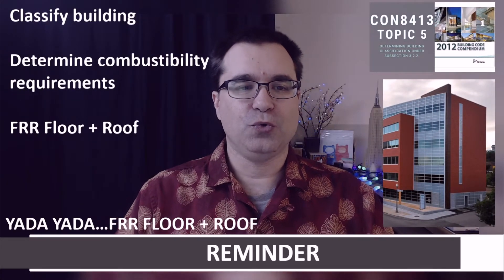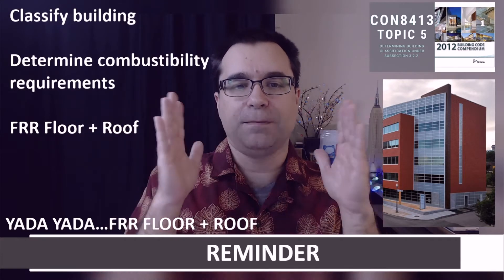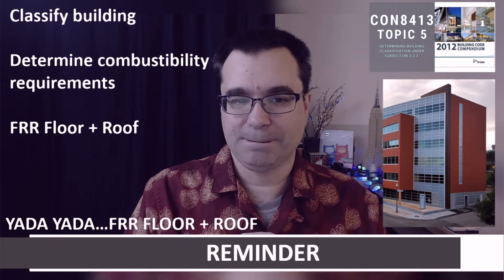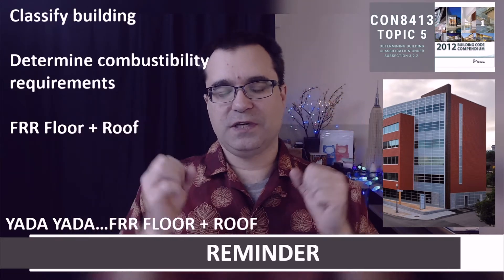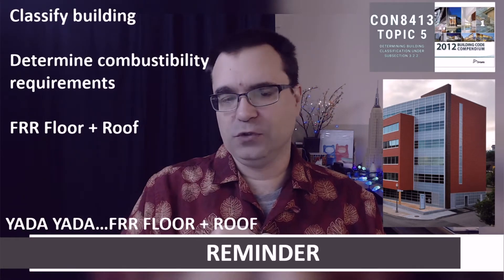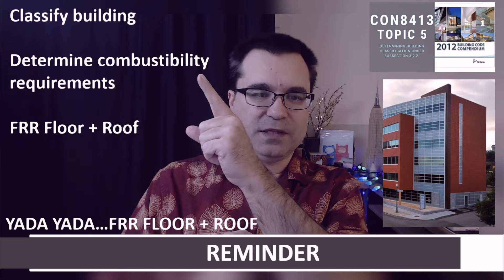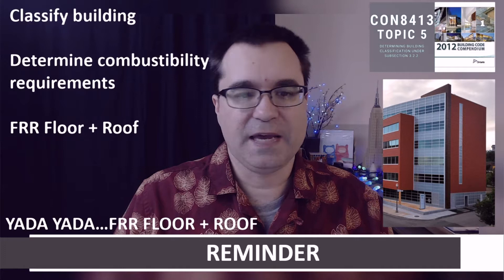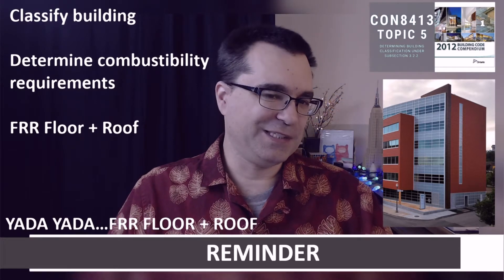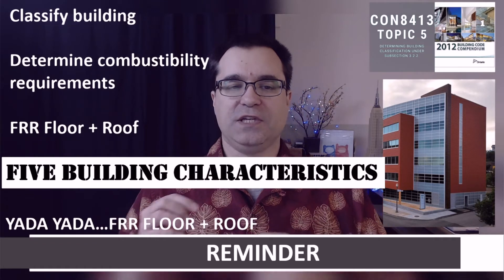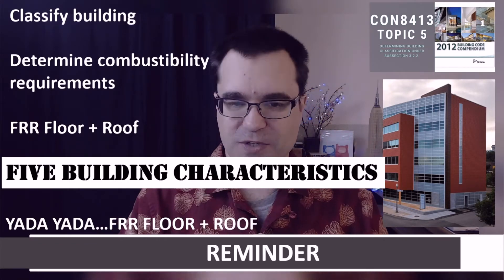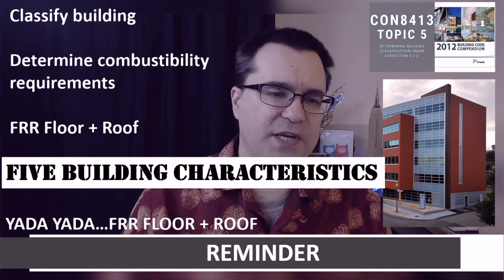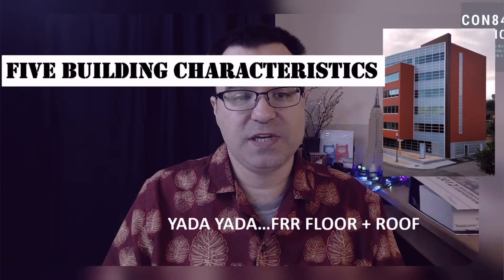In order to figure out which articles apply to this building, you have to classify it. Once we've done all that work and figured out the correct article, we will be able to determine the combustibility requirements and the appropriate fire resistance ratings for both the roof and the floor. How do we figure out the classification of the building? We're going to use the five building characteristics.